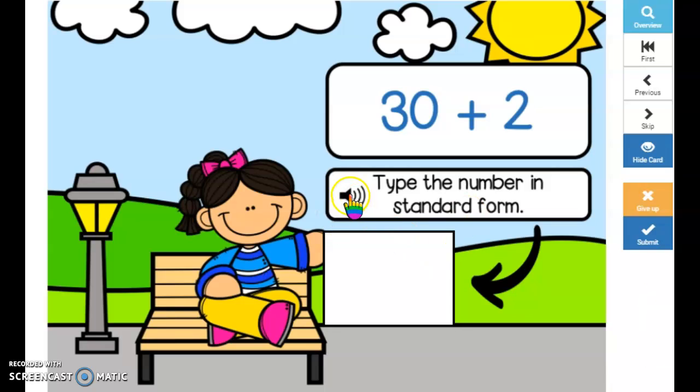So if you press here it'll tell you the audio, but this one says type the number in standard form. Remember, standard is just regular form, so the number in standard form is 30 plus 2. The way we normally see 30 plus 2 is 32.